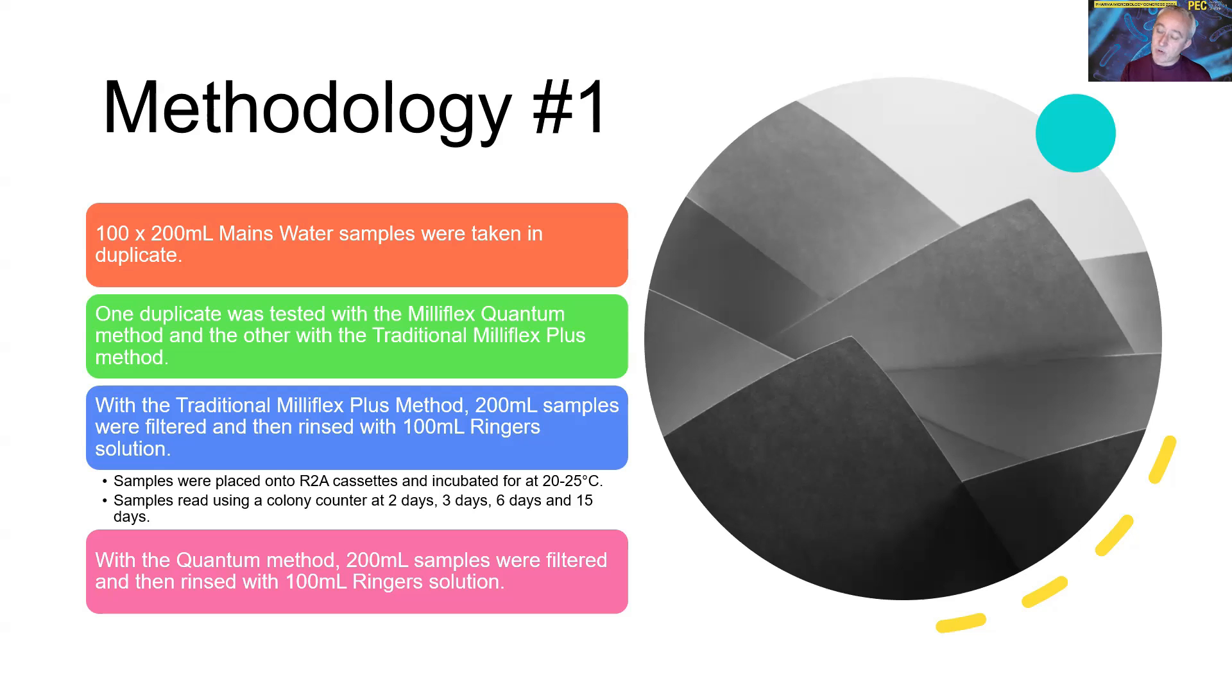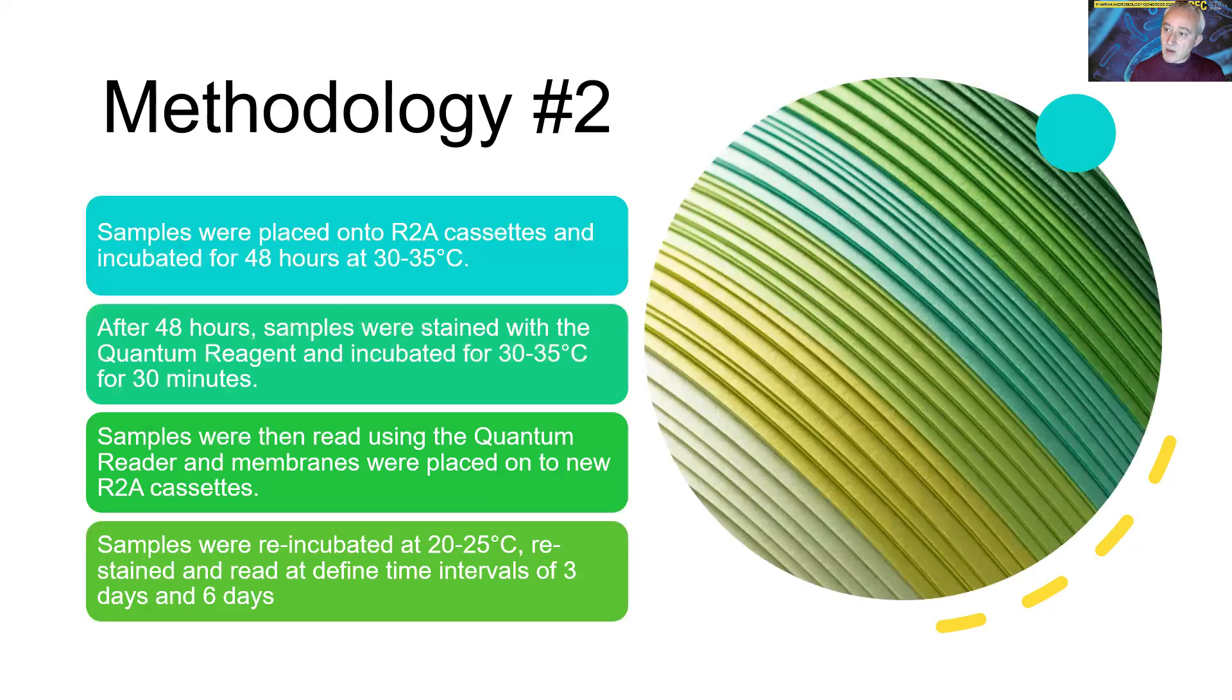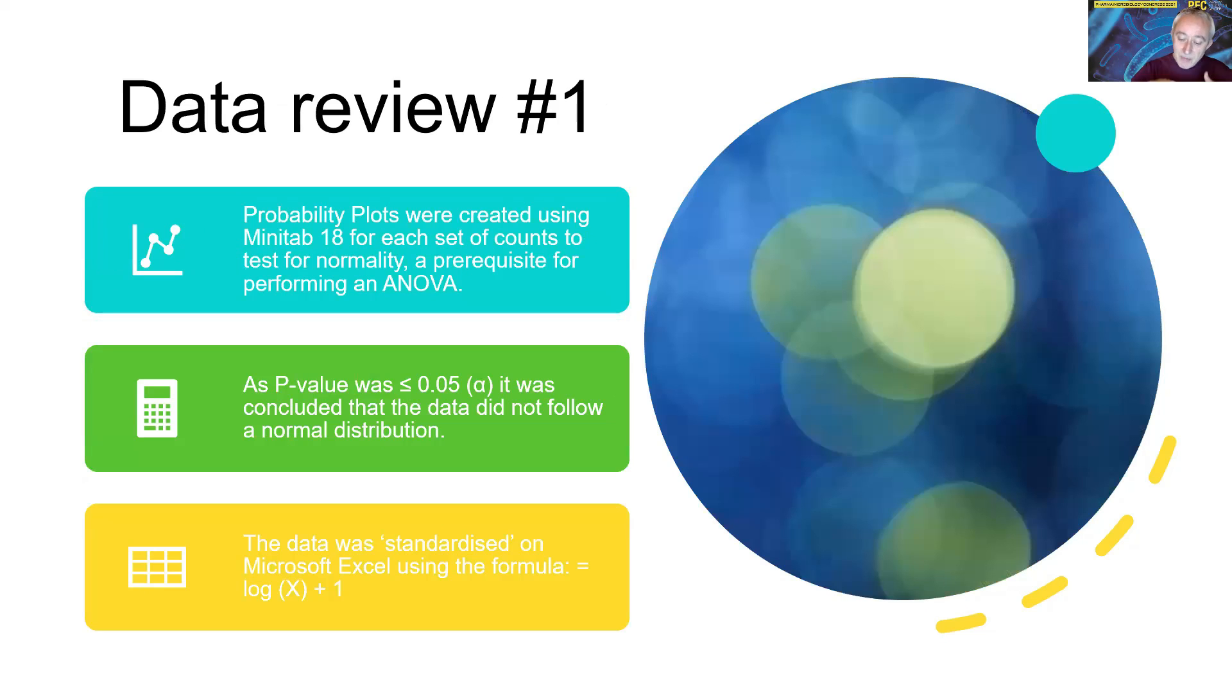The samples were incubated at 20 to 25 degrees. Both sets of samples were then taken out of the incubator and looked at at two days, three days, six days, and 15 days. To evaluate the quantum, we did this two-day look. At around 48 hours, the samples were taken out and stained with the quantum reagent, then incubated for 30 minutes, and then subjected to the quantum reader. After this exercise, the samples were again restained at three days and six days. We're trying to build up a picture of when we're getting the optimal colony growth.